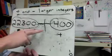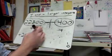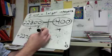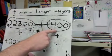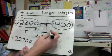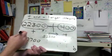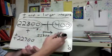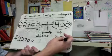Using the number line: I start at 22,300 and go 400 in the positive direction. Zero is way over to the left, so going 400 to the right puts me at 22,700.